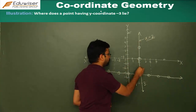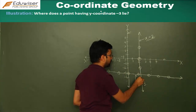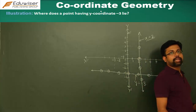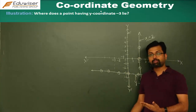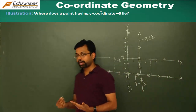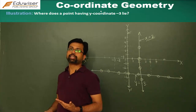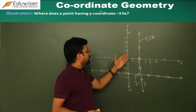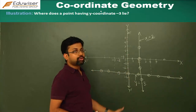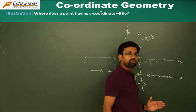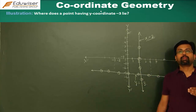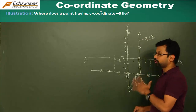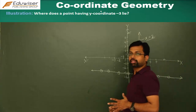Any point on this line will have its x-coordinate as 2. So if somebody asks where the points having x-coordinate equal to 2 lie, you state that those points lie along a line parallel to the y-axis passing through the point x equals 2 on the x-axis.